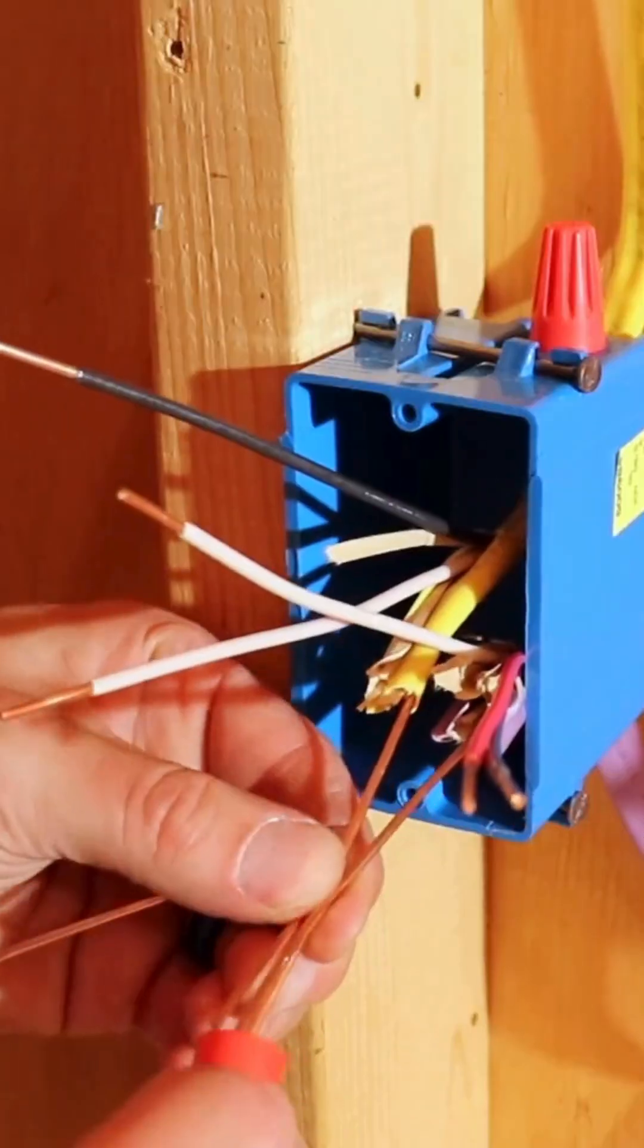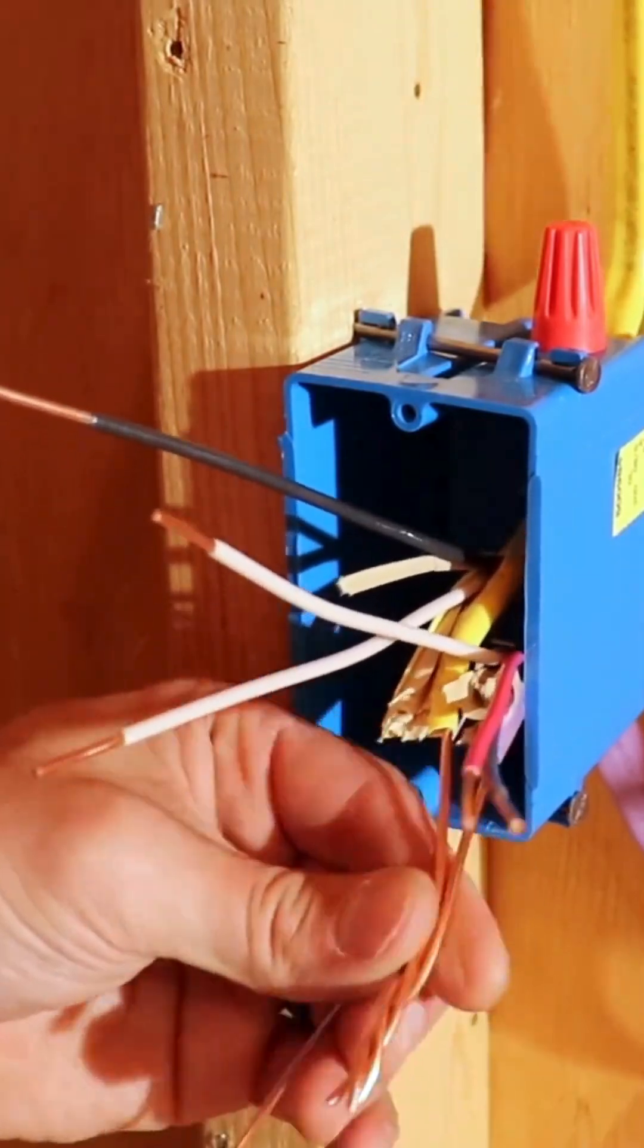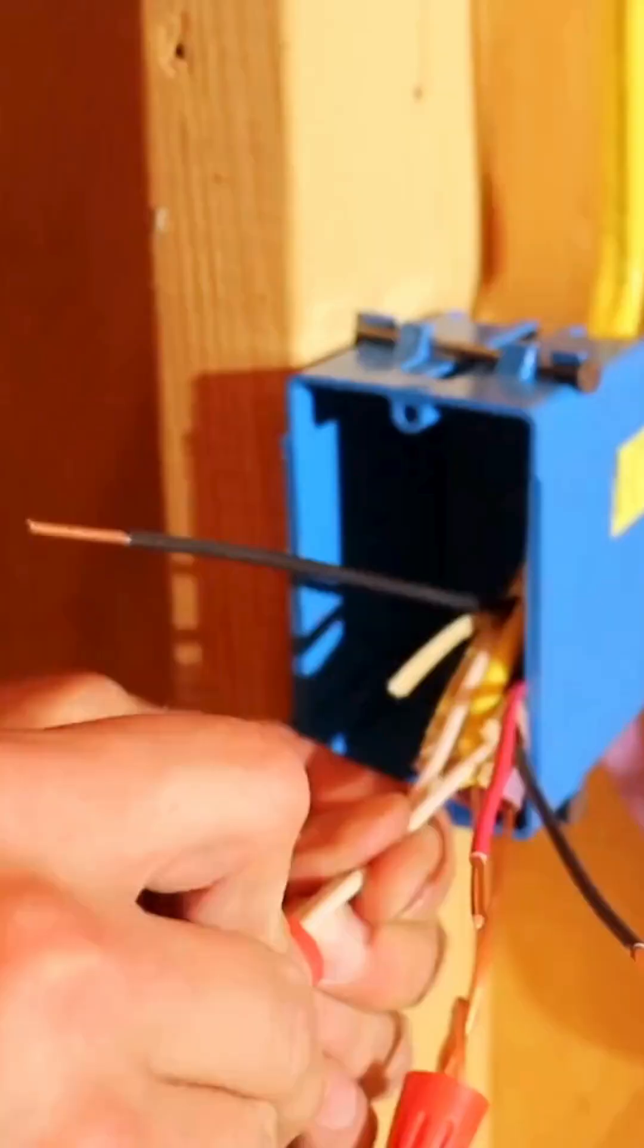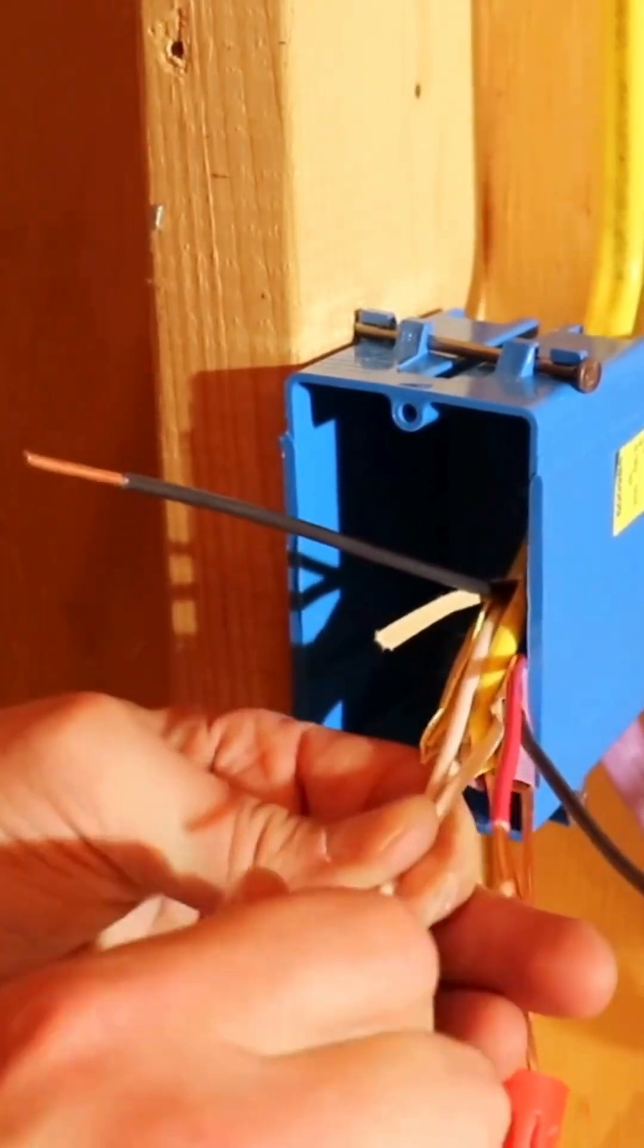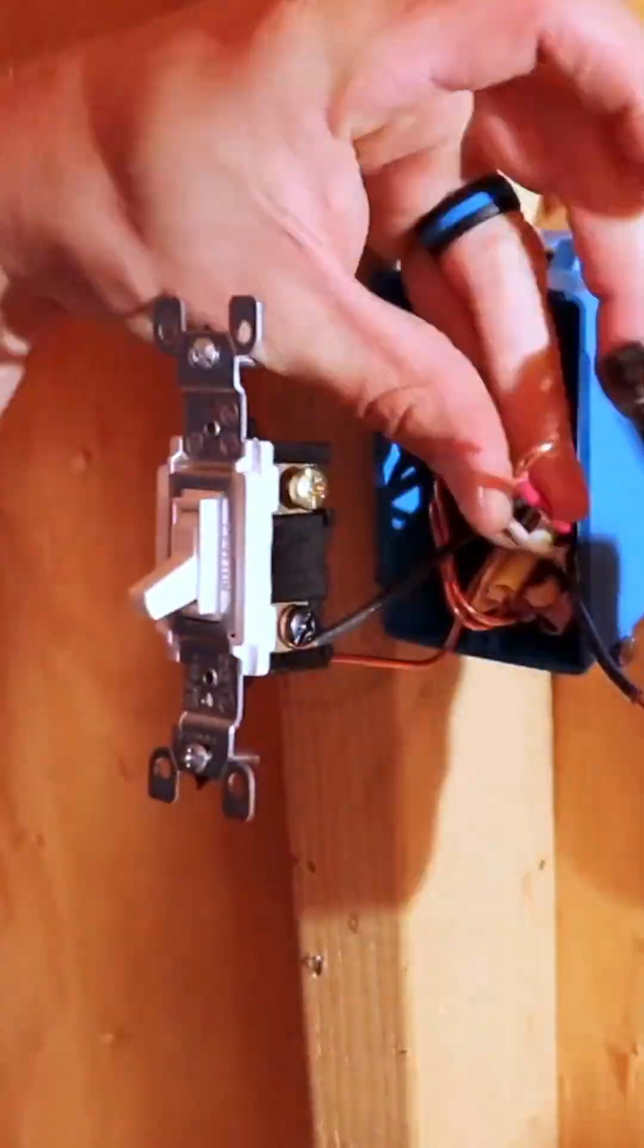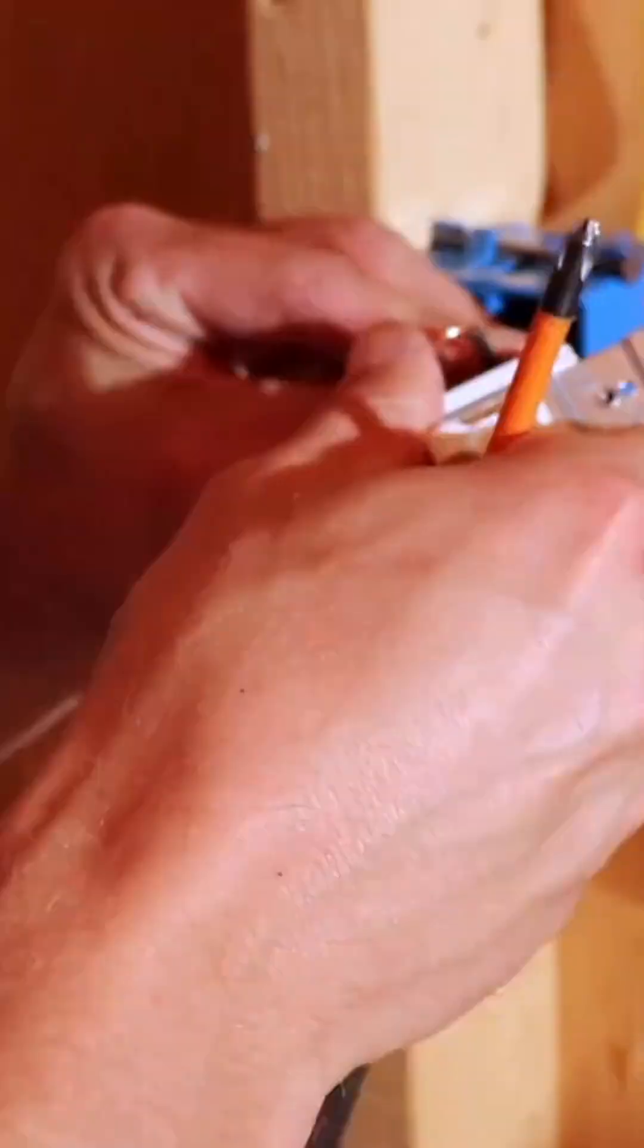This switch is wired pretty much identically to the first one. We wire nut our grounds together and use a pigtail to make the ground connection on the switch. We wire nut our neutrals together and push them back into the box. We connect our traveler wires to the brass traveler terminals.